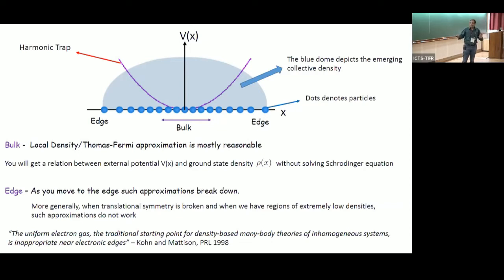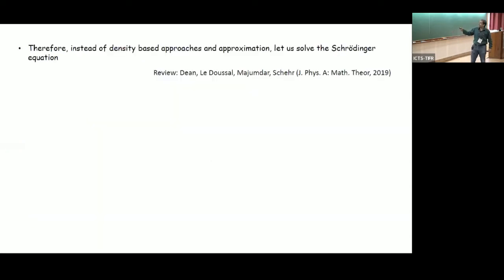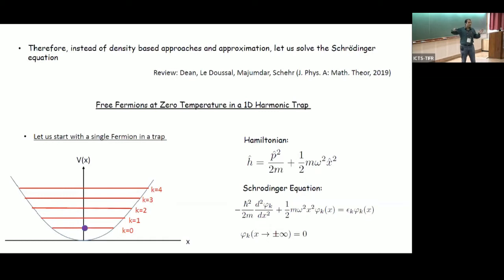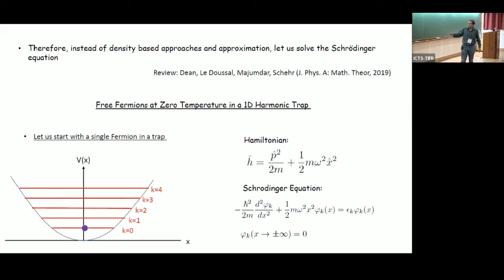If you have inhomogeneity or regions of small density, it's probably better to start with a more microscopic point of view. So the goal is: is there a rigorous description of fermions in external traps? There is a nice review I would suggest you look at discussing such questions. Now let me start with the simple setup: a single fermion in a trap. Please stop me if you have questions, because if you understand the first few slides the take-home message will be clear.